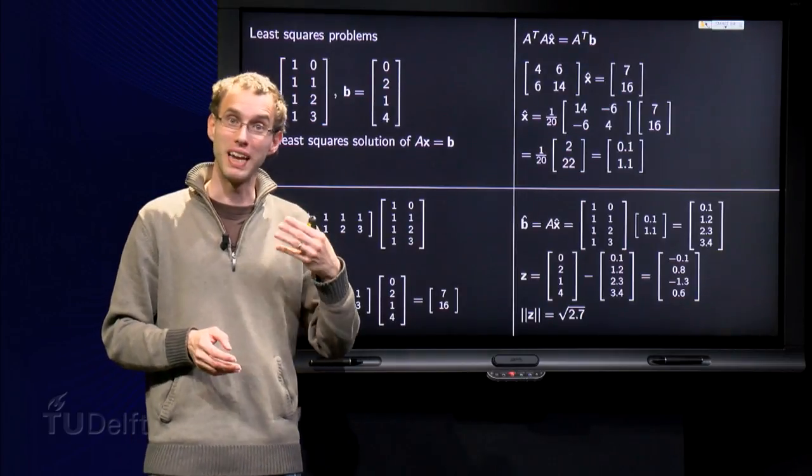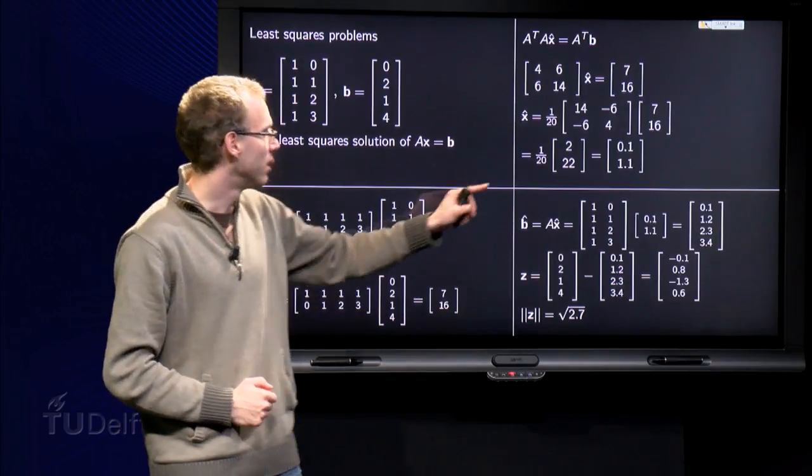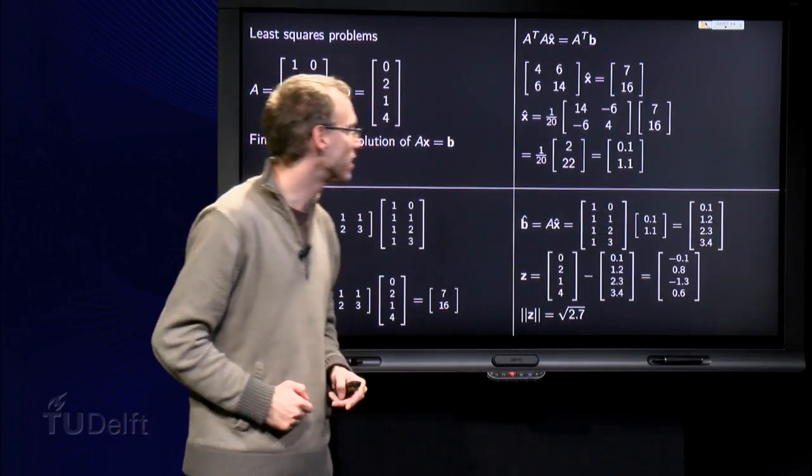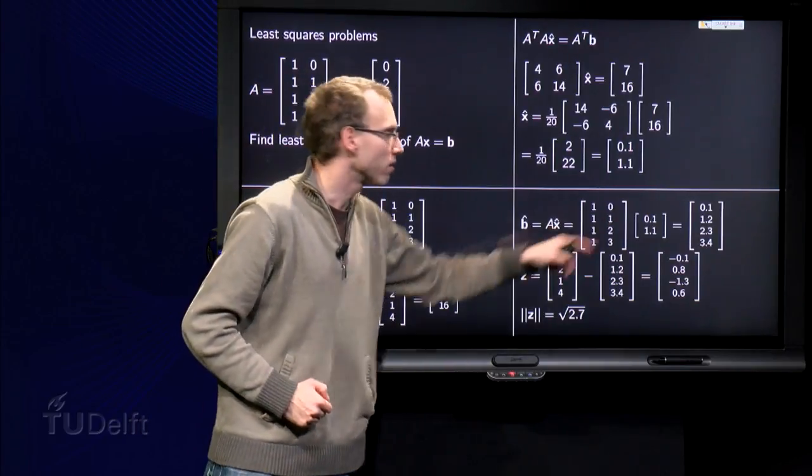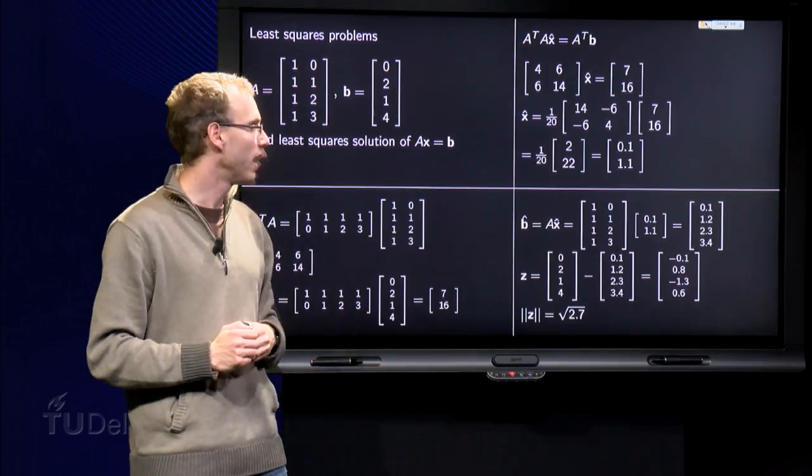That's no problem, because we have x hat and b hat equals A times x hat. So we have A times x hat, we compute the product of the two, we get 0.1, 1.2, 2.3 and 3.4. That's our b hat.